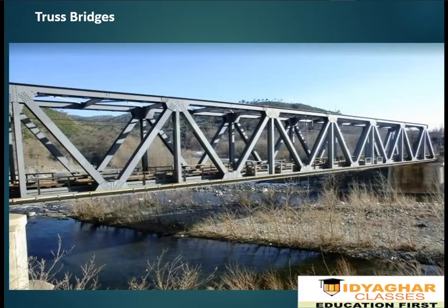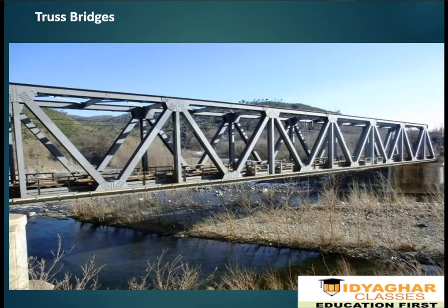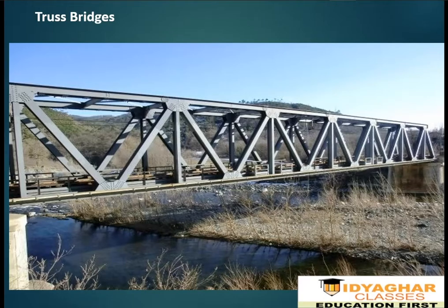Truss bridges are constructed in triangular shapes. Triangles are used in the structure of bridges because they evenly distribute weight without changing proportion. When force is applied to a rectangular shape it will flatten out — bridges used to be very weak before triangular shapes were incorporated into their structure.